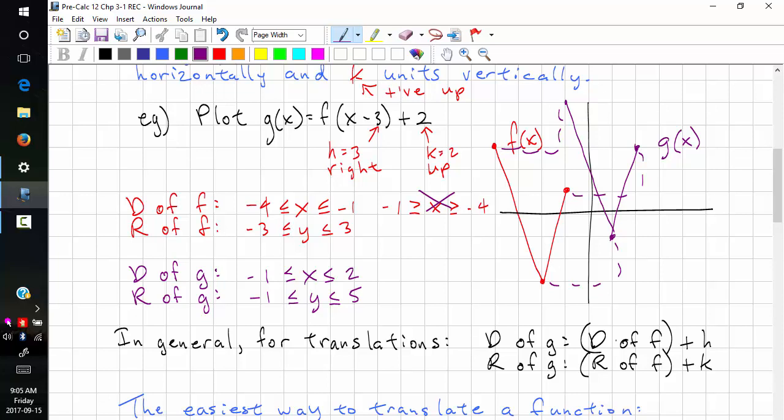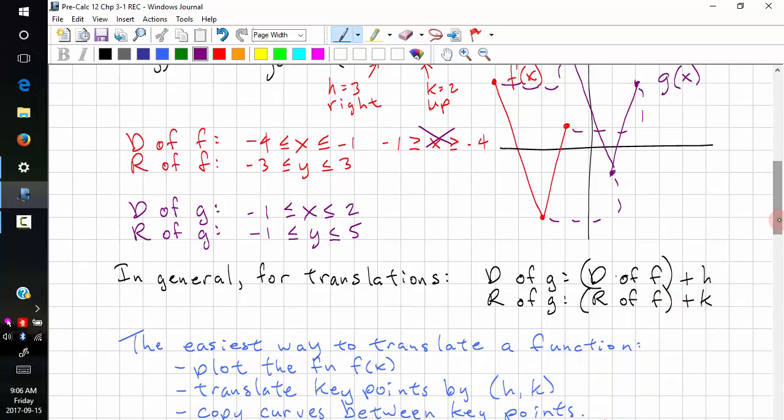So in general, for translations, we can just add h to the domain of f to get the domain of g, add k to the range of f to get the range of g. h does not affect the range, and k does not affect the domain.